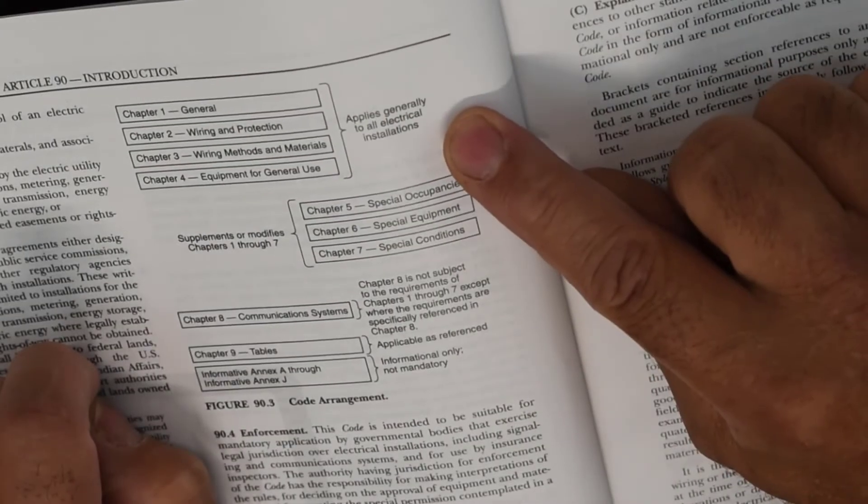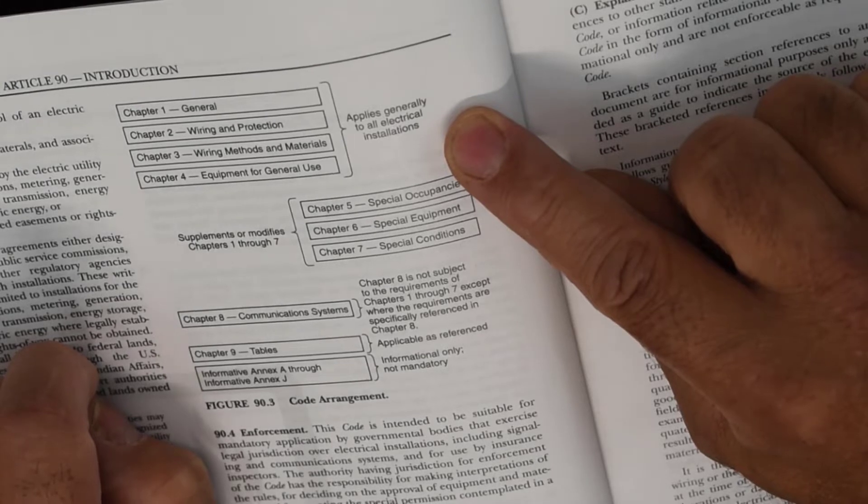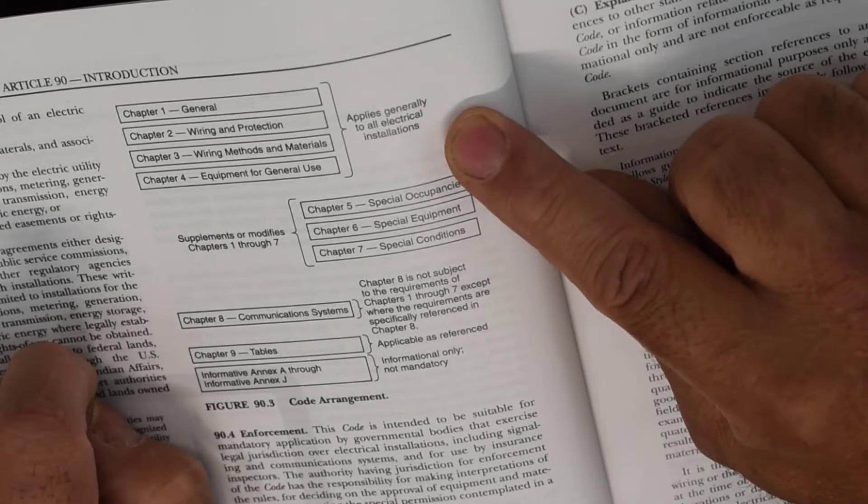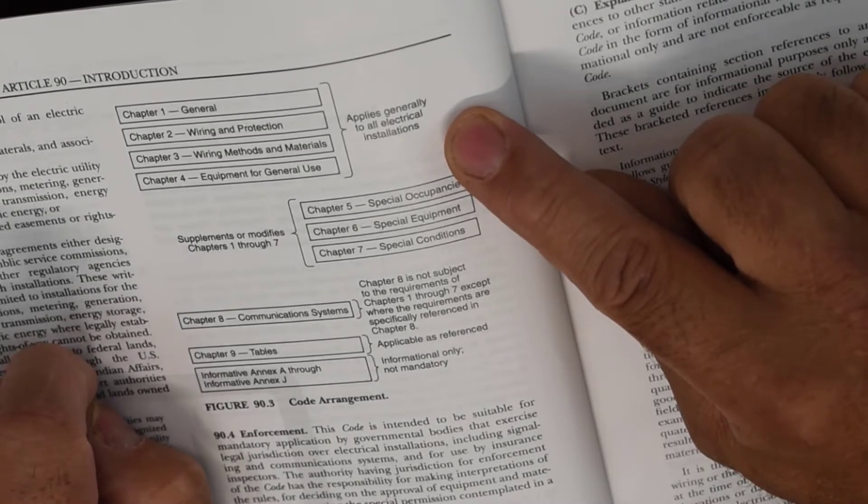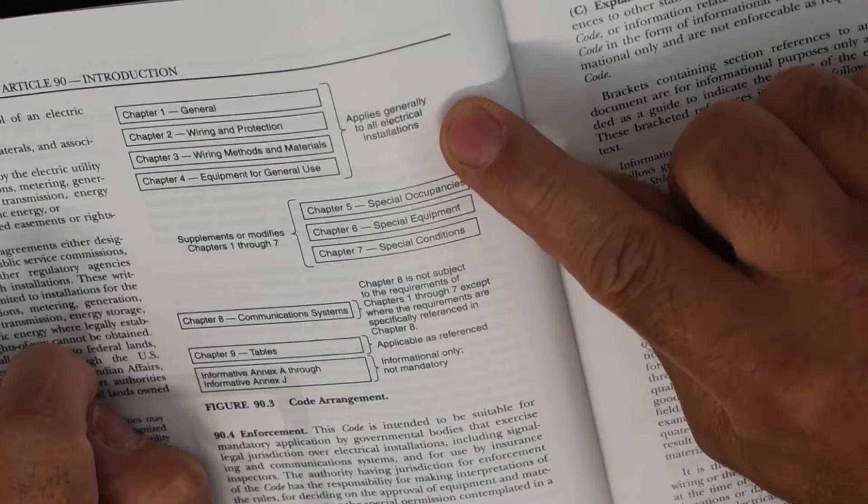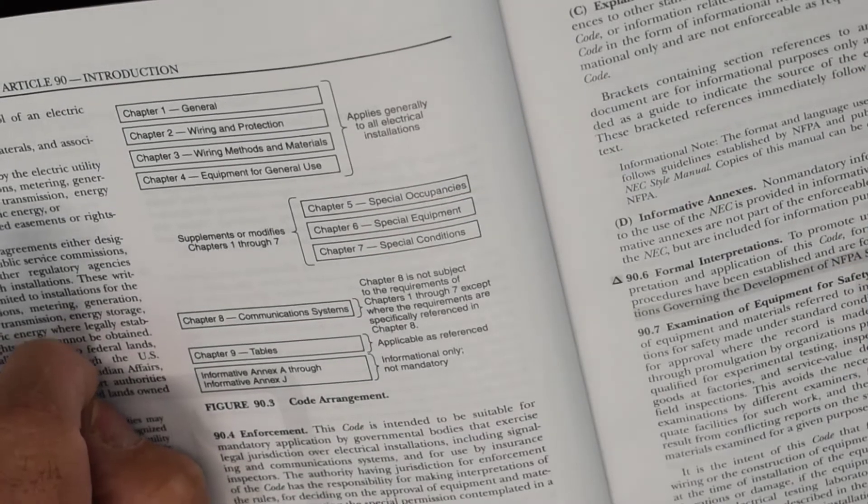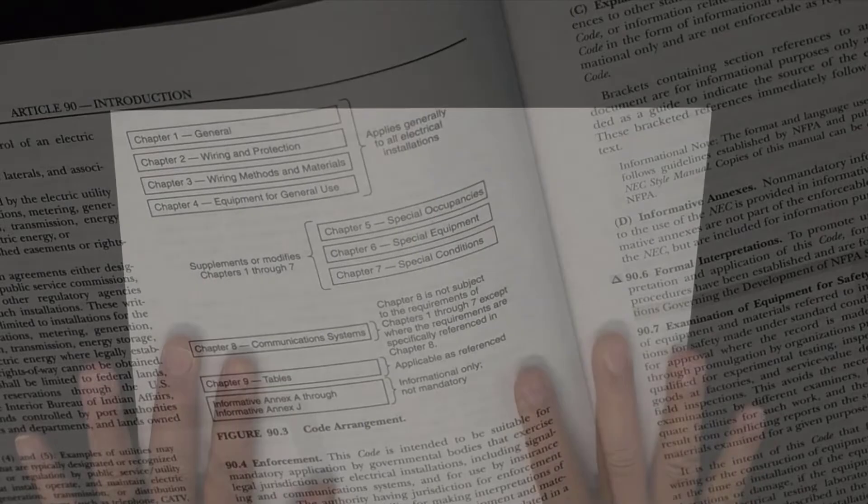The bracket tells us that those first four chapters apply generally to all electrical installations. Now I want you to use that thought pattern and we're going to compare that to a job site format. I want you to take a blank piece of paper, hopefully you got just a piece of copy paper or a piece of notebook paper, whatever it is, turn it sideways.